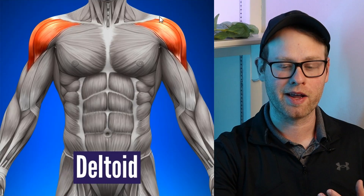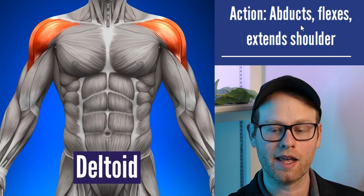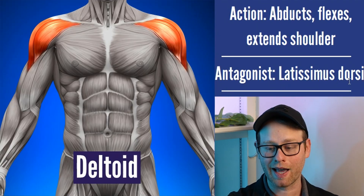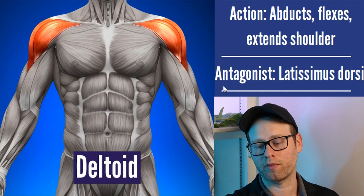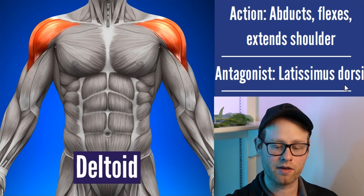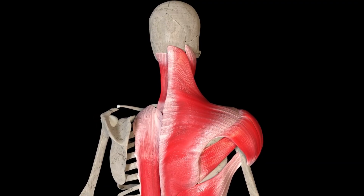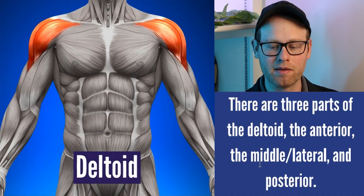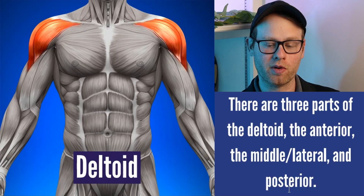Next up, we have the deltoids, sitting right up on top of the shoulder. When you think about deltoids, mainly think about shoulder abduction, though they also aid in shoulder flexion and extension. One of the main antagonist muscles for the deltoids would be the lats, because the lats are partially responsible for shoulder adduction — the exact opposite of abduction. There are three different parts of the deltoid: the anterior or front part, the middle or side part, and the posterior or back part.